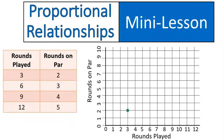So you play three rounds, you get two rounds on par. Nice job. You play six rounds, you get three rounds on par. We play nine rounds, we get four rounds on par. And we play 12 rounds, and you get five rounds on par.